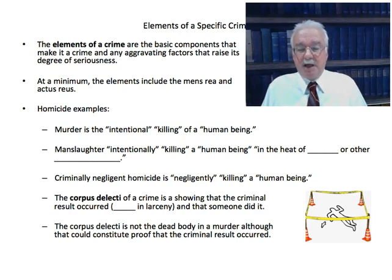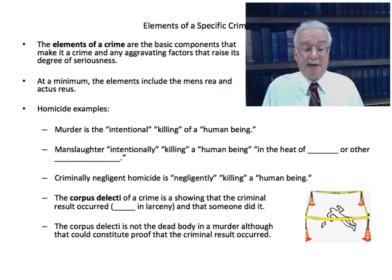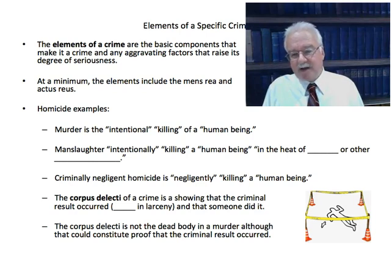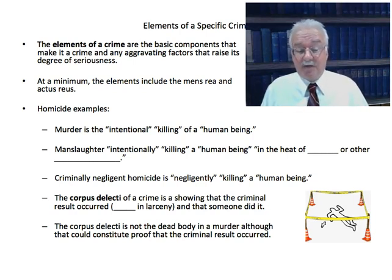Another example: if you recklessly killed somebody — drag racing on a residential street and hitting and killing a pedestrian — the mens rea is recklessly. You didn't intend to kill them, but you were engaging in extremely dangerous, unjustified behavior which created a substantial risk of killing somebody. That would also be manslaughter. Then we have criminally negligent homicide — negligently killing a human being. If the person who dropped the bowling ball off the building could establish they didn't perceive the risk, that would be negligent homicide, a lesser offense.